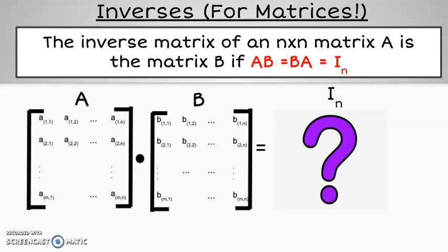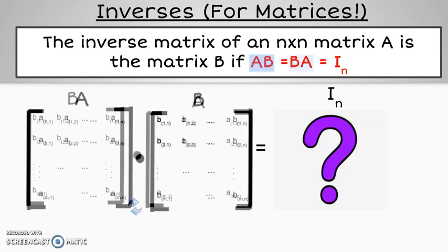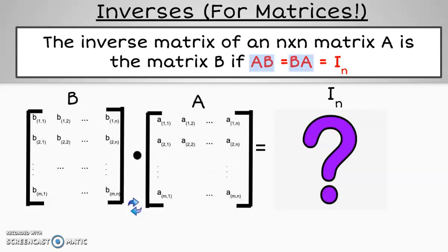According to our definition, both products A times B and B times A must be defined and give the same result. They have to be square for that to happen. And the result must be the identity matrix.